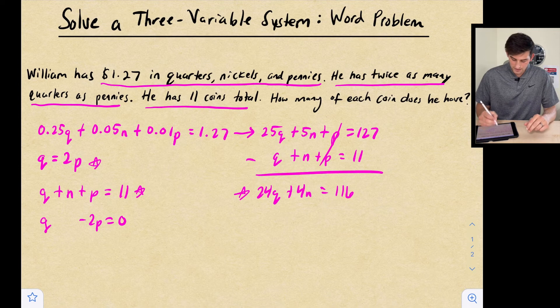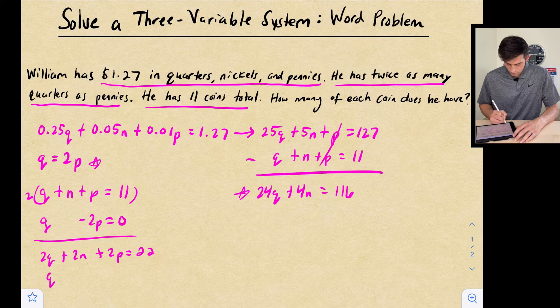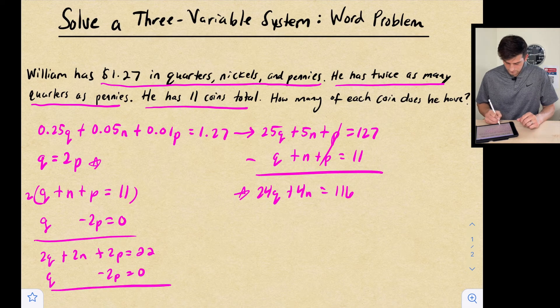And now I'm going to multiply my top equation here by two. So now it's going to give me this: 2Q plus 2N plus 2P equals 22. And now we have Q. We don't have an N here, so I'm just leaving a blank. This is minus 2P equals zero.